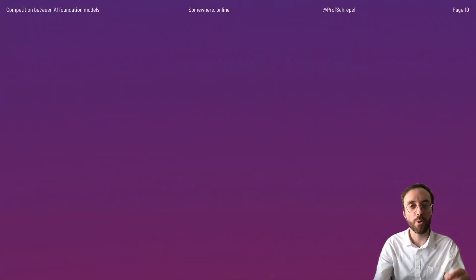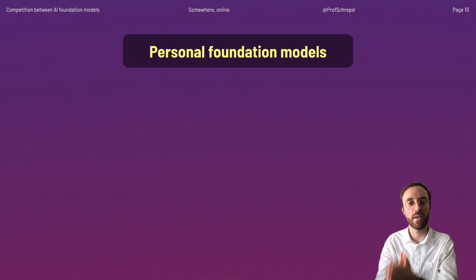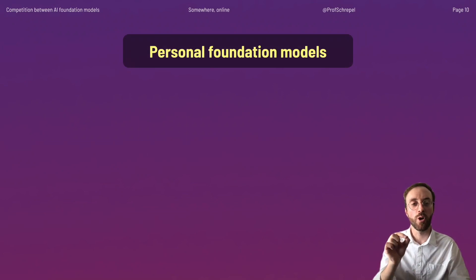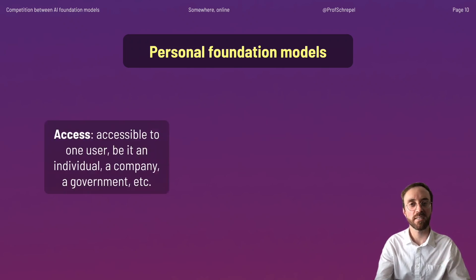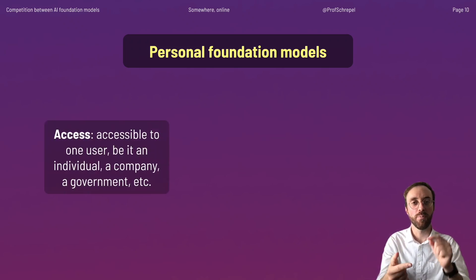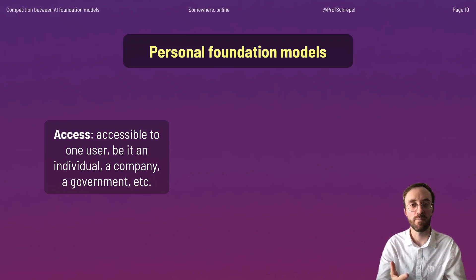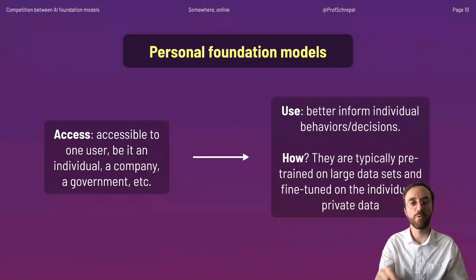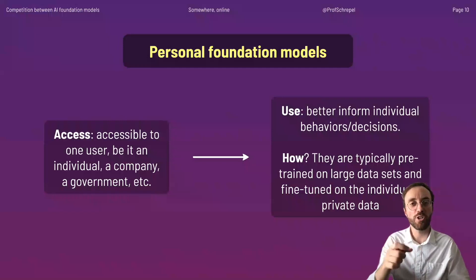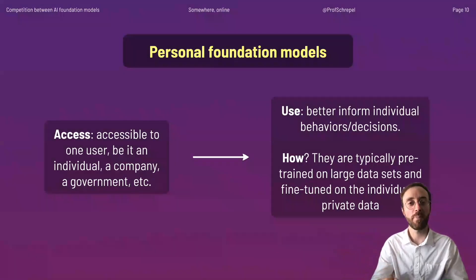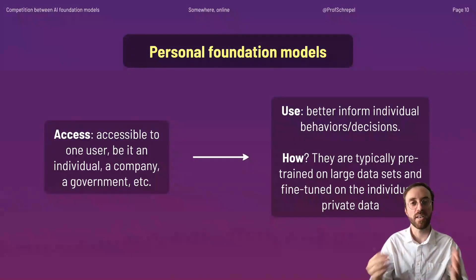The third and final type is what we call personal foundation models. These models can be accessed by just one user — be it an individual, a company, a government, and so on. They can be used to better inform individual behaviors or decisions, and they are typically fine-tuned with your own private data, such as what you have done in the past, your daily activity, etc.